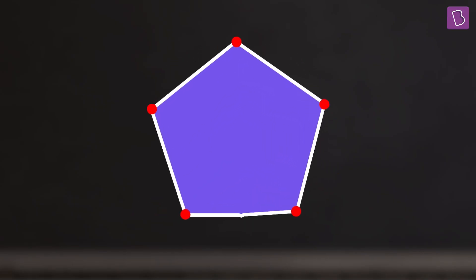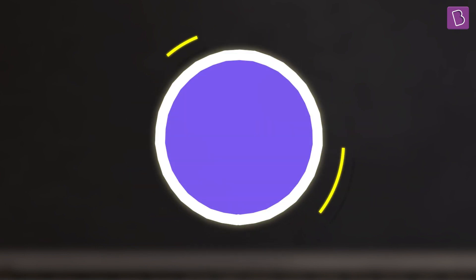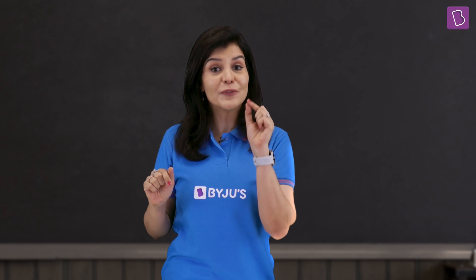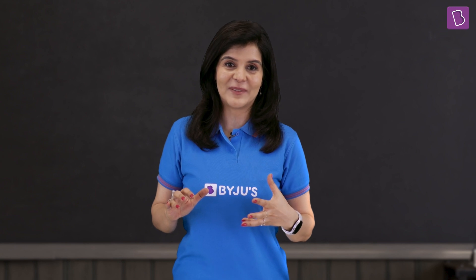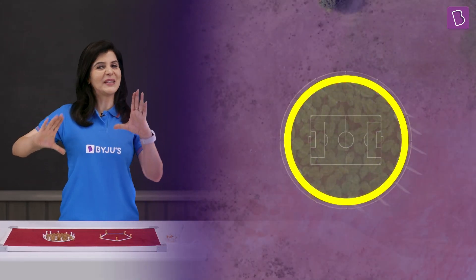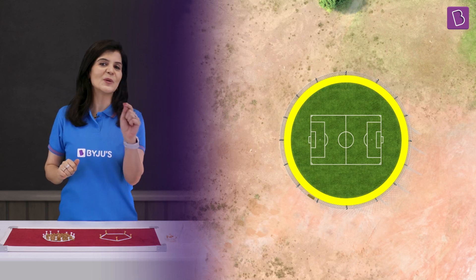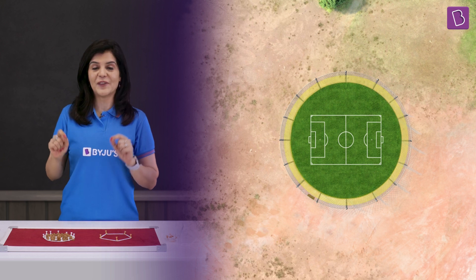Now you know that the circle is the shape that has the largest area for a fixed perimeter. You can also confirm this by using the formulae for calculating areas of various shapes. So a circular park would be the best option for the kids' playground, giving them the most area possible for a given length of fence.